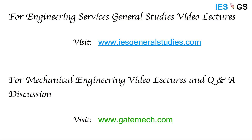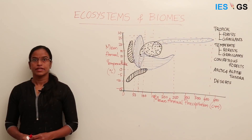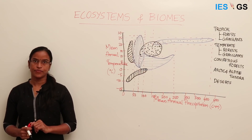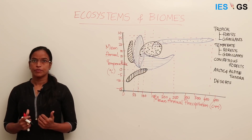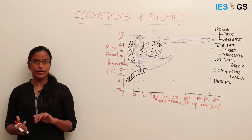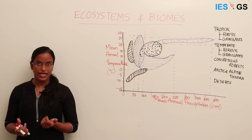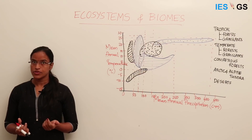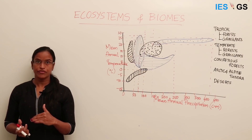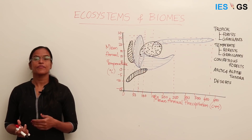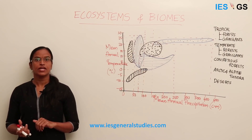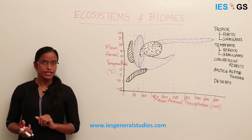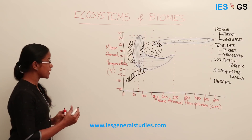The topic ecosystems and biomes are very important for UPSC exams because UPSC tends to ask applied questions from this topic regarding different characteristics of ecosystems and biomes, and also the animal life and plant life in biomes. Many questions used to come from this topic in previous years, so it is very important. Let us start the discussion with biomes — what is a biome?